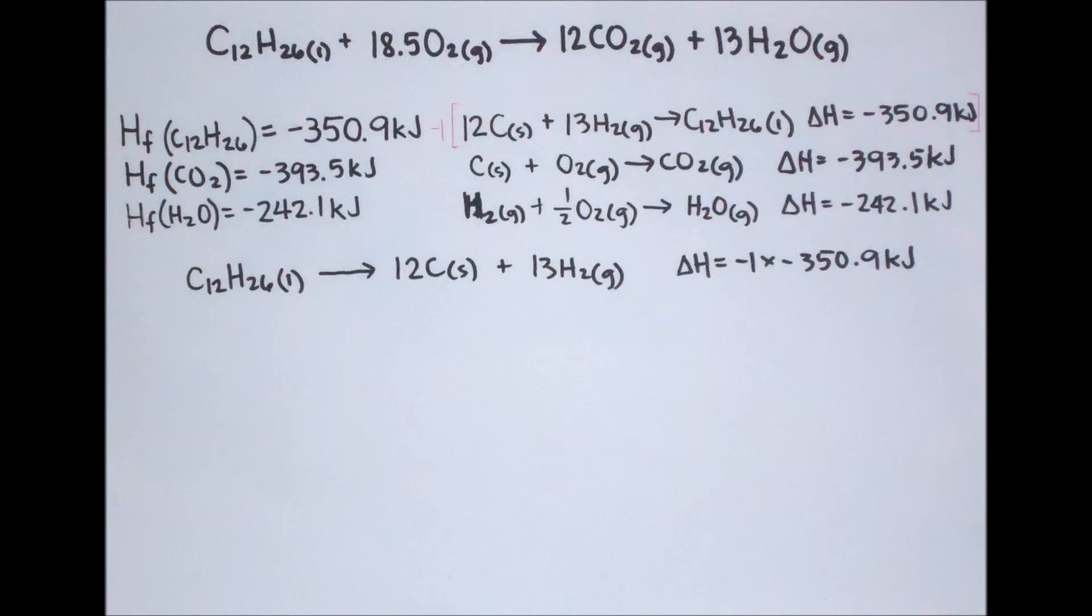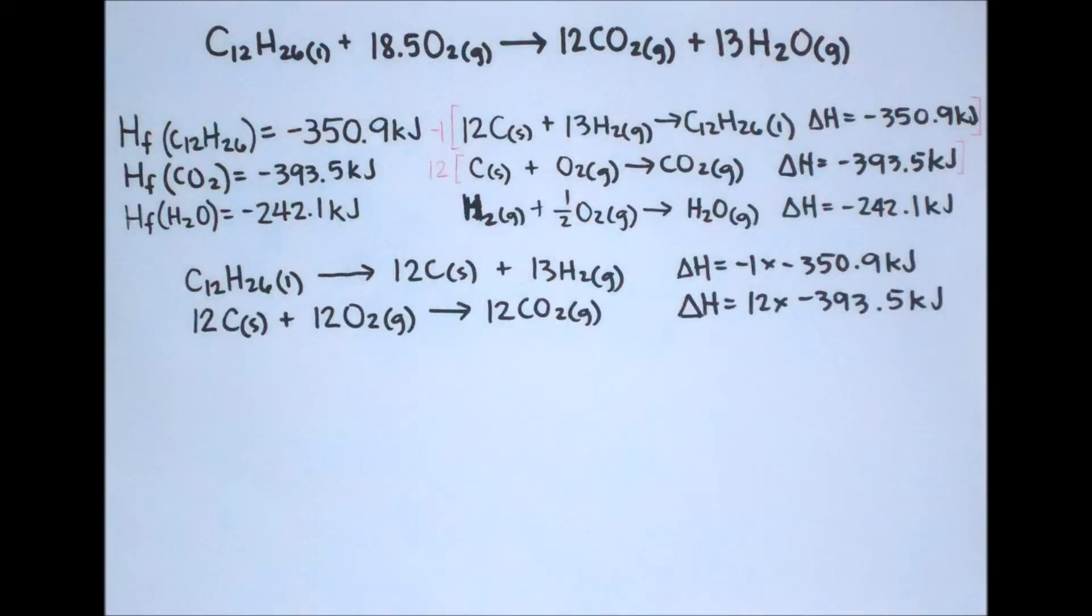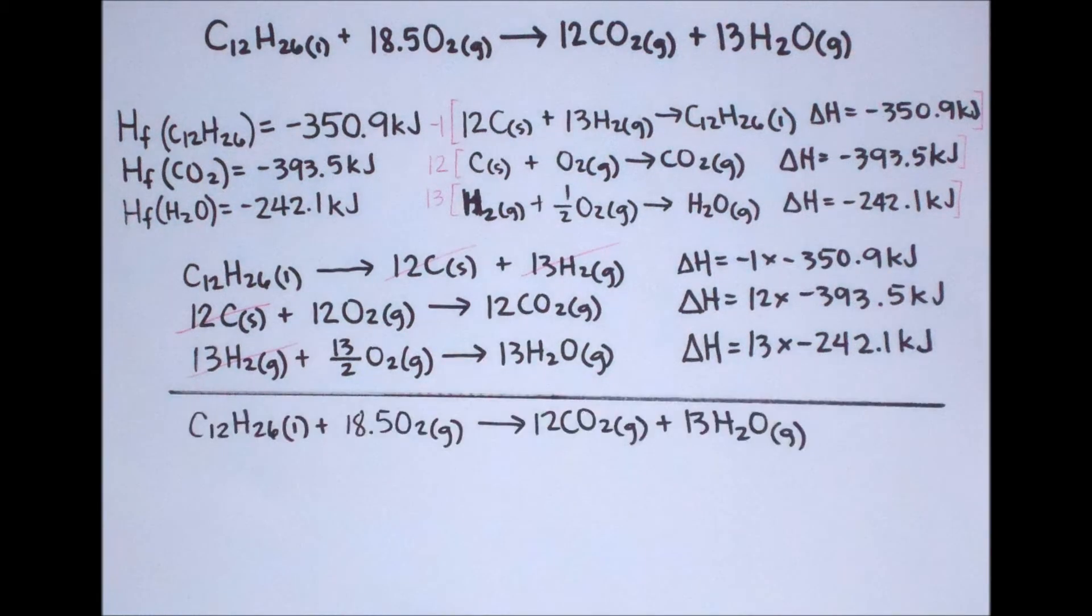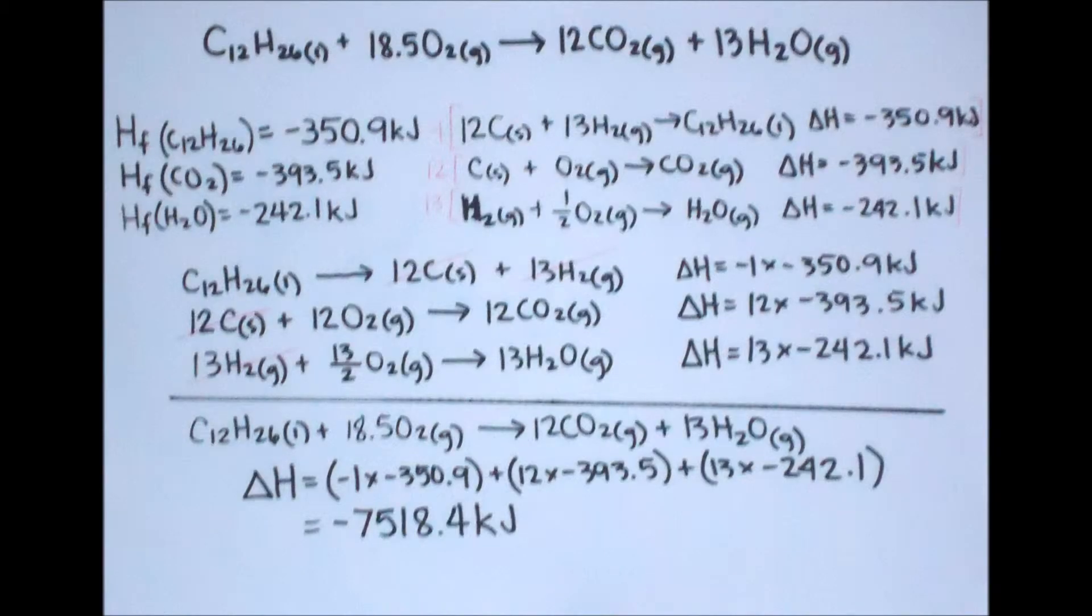So there we have it. The change in enthalpy for the combustion of kerosene is negative 7,518 kJ. Here is the heat of combustion of paraffin wax using Hess's Law and the heat of formation.